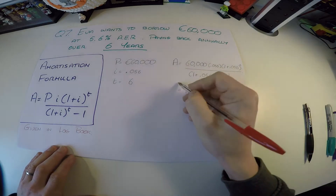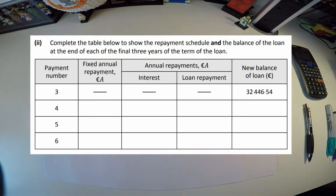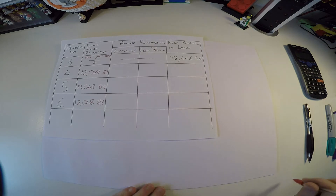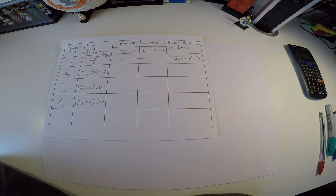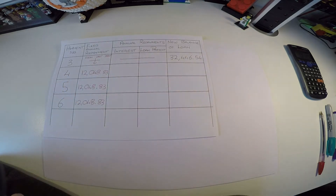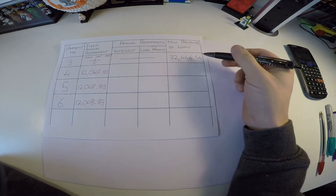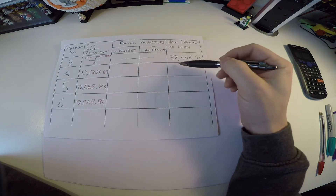In the next part we're given a big table. I've drawn it out here to make it easier to understand. We need to fill in this repayment schedule showing the loan balance over time. We start at payment number three — after payment three the new balance is 32,446.54. She's three years in, halfway through the loan, and we need to see what happens from here.